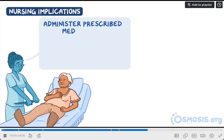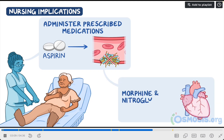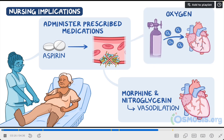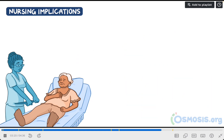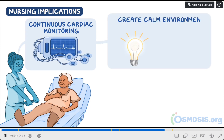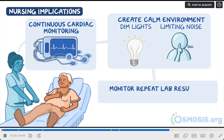Administer prescribed medications, like aspirin to inhibit platelet aggregation and clot formation, morphine and nitroglycerin to promote vasodilation of the coronary arteries, and oxygen to increase oxygen delivery to the heart. Place your patient on continuous cardiac monitoring and create a calm environment by dimming the lights and limiting noise. Be sure to monitor your client's repeat laboratory results and prepare them for cardiac interventions as needed.